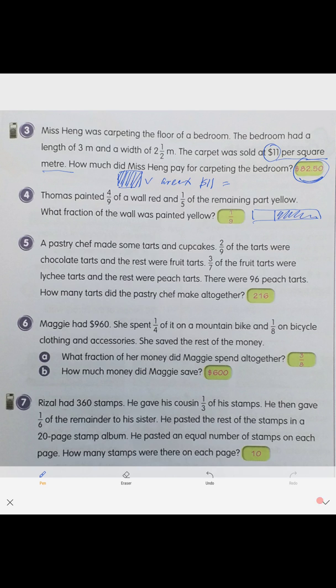If you need to do this, you need to draw your model. Draw the total wall, then the remainder. Draw your remainder again and divide it by 5 parts. One-fifth of the remainder will be yellow. From there, try to get the answer.